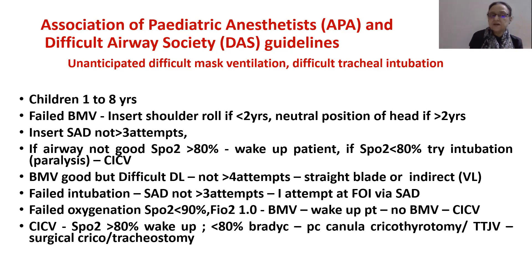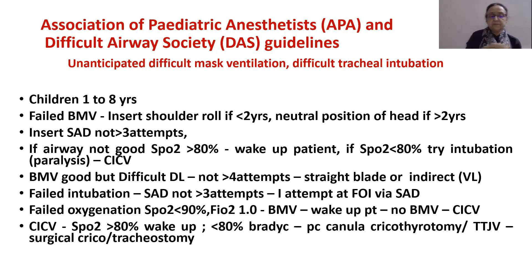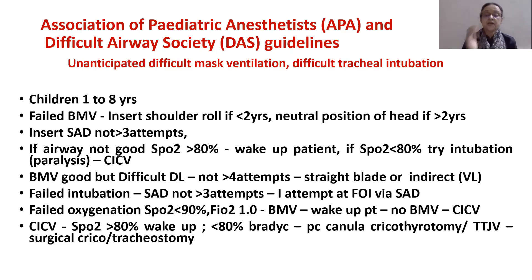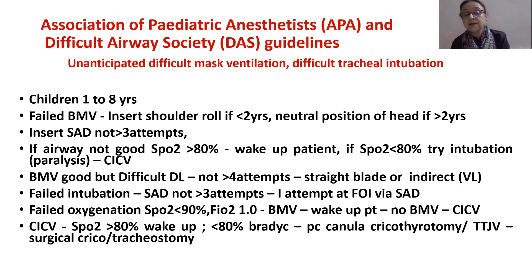Per the DAS guidelines, if bag-mask ventilation fails, insert a shoulder roll, then insert a supraglottic airway device — no more than three attempts. If the airway is not adequate and saturation is above 80%, wake up the patient. If saturation is declining, try intubating with paralysis to avoid a CICV (can't intubate, can't ventilate) situation.